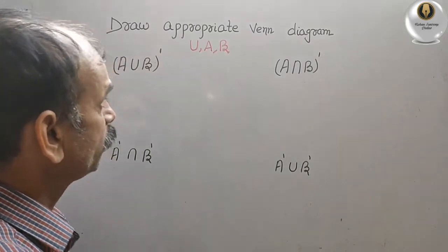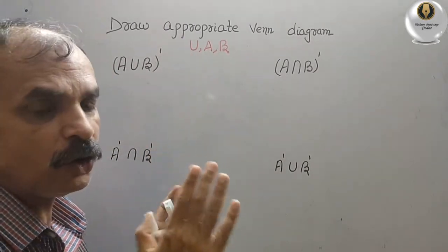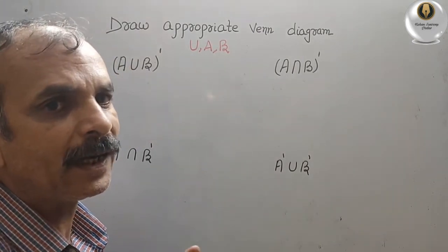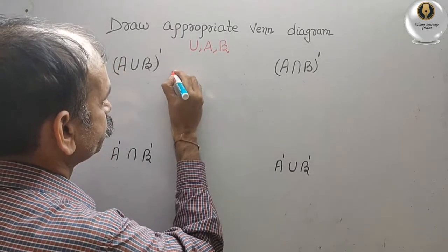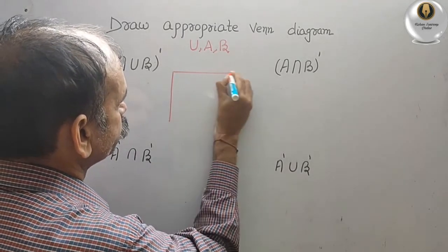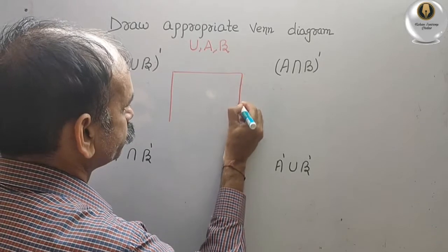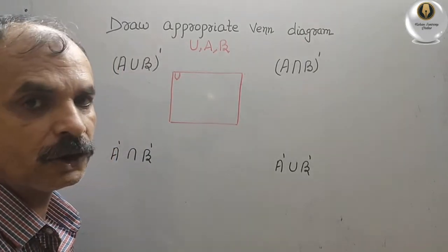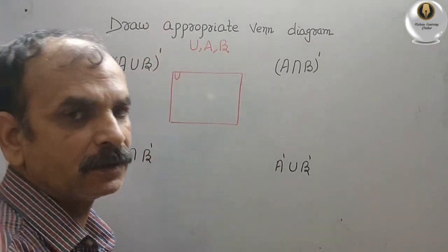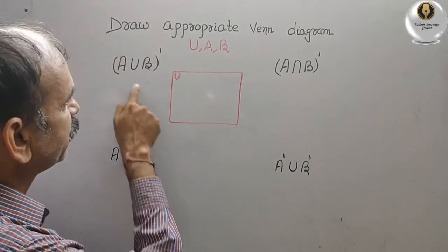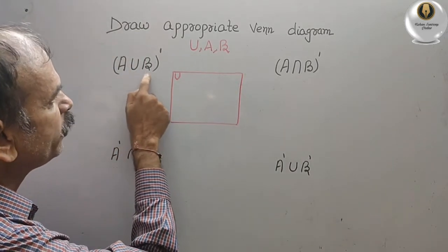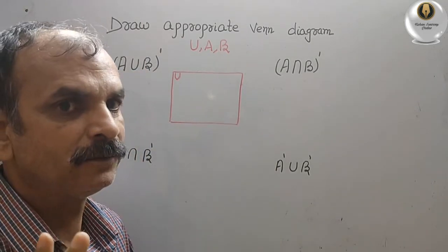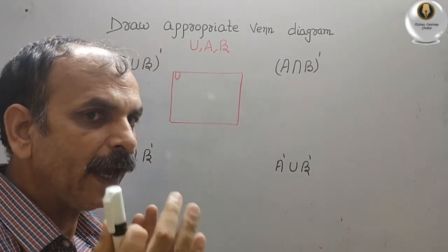First we have to draw the universal set. How will we draw it? We will just make a rectangular box. So this is your U now — this is your universal set. Everything is inside here. Then they have told A union B. We just have to see what is given in the bracket: A union B.